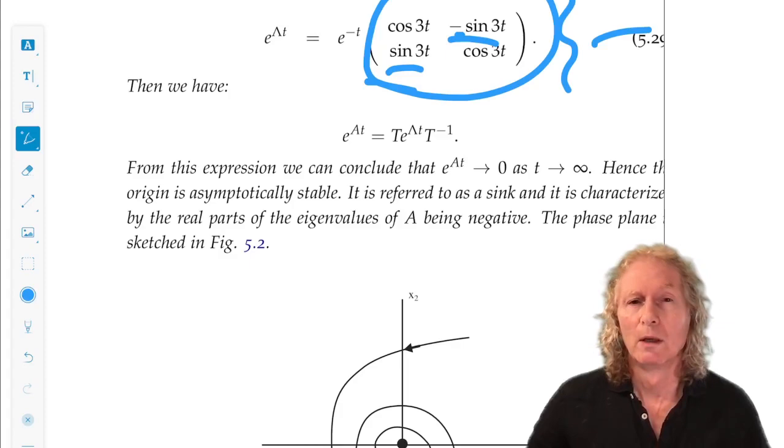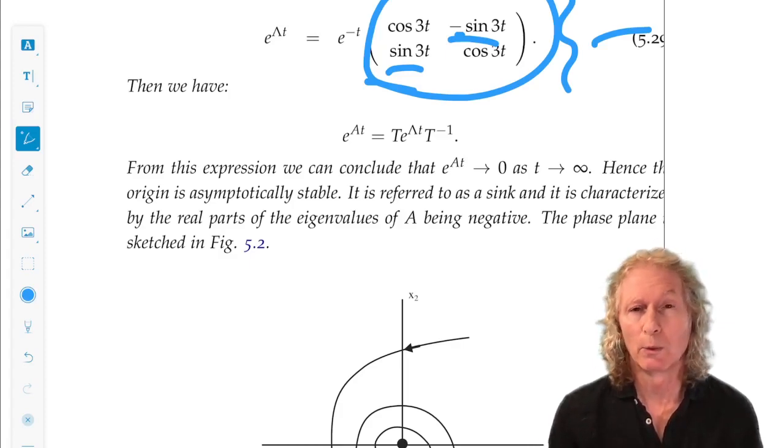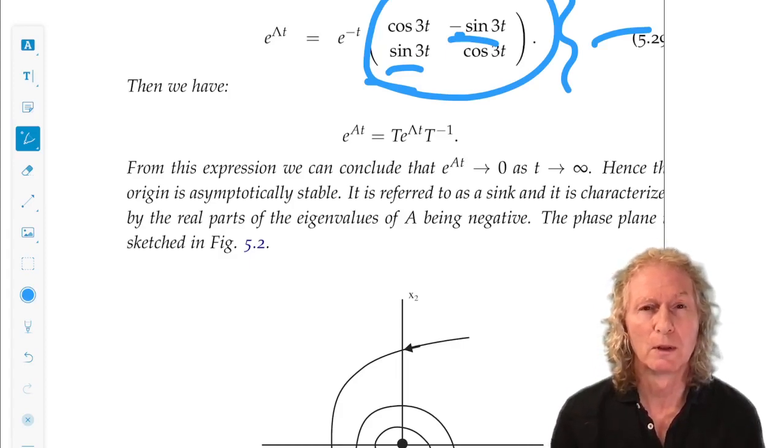In the first example, the eigenvalues are purely real, and they were both positive, and the origin was unstable.